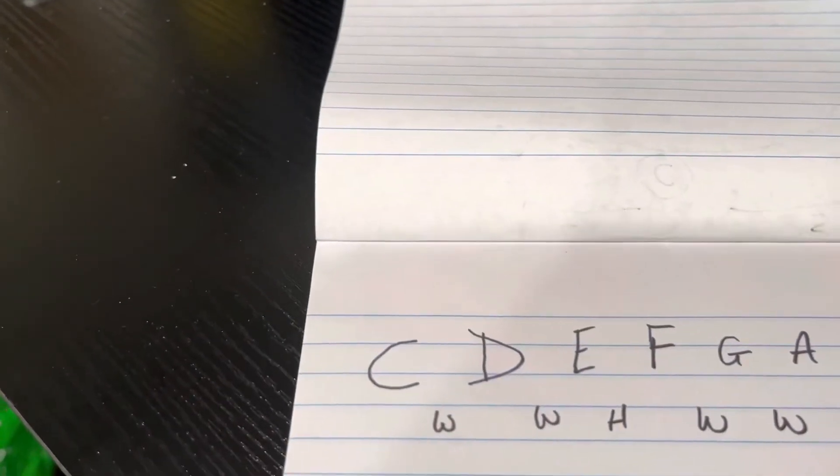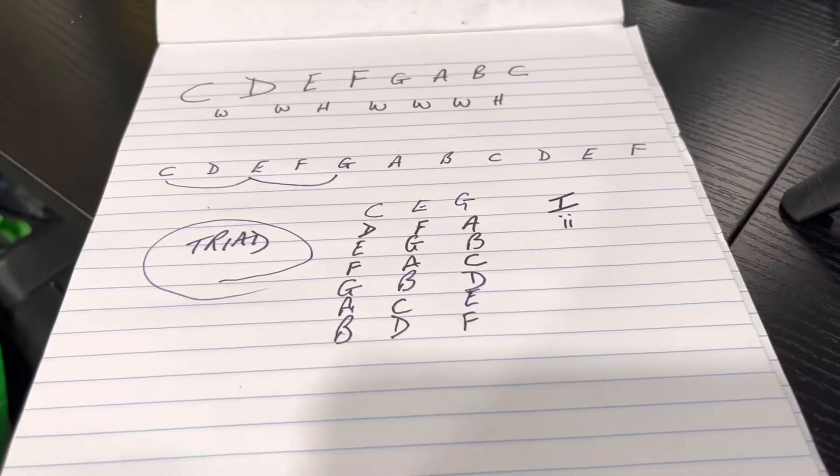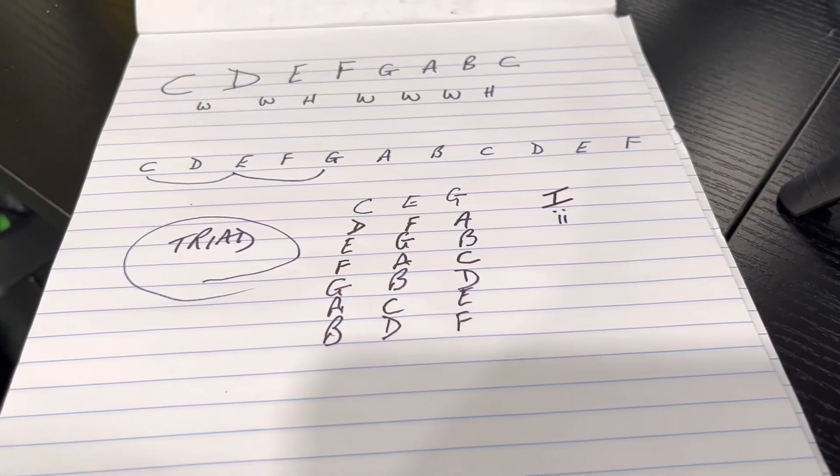The second chord in the key gets a Roman numeral II. It's a minor chord, D minor.